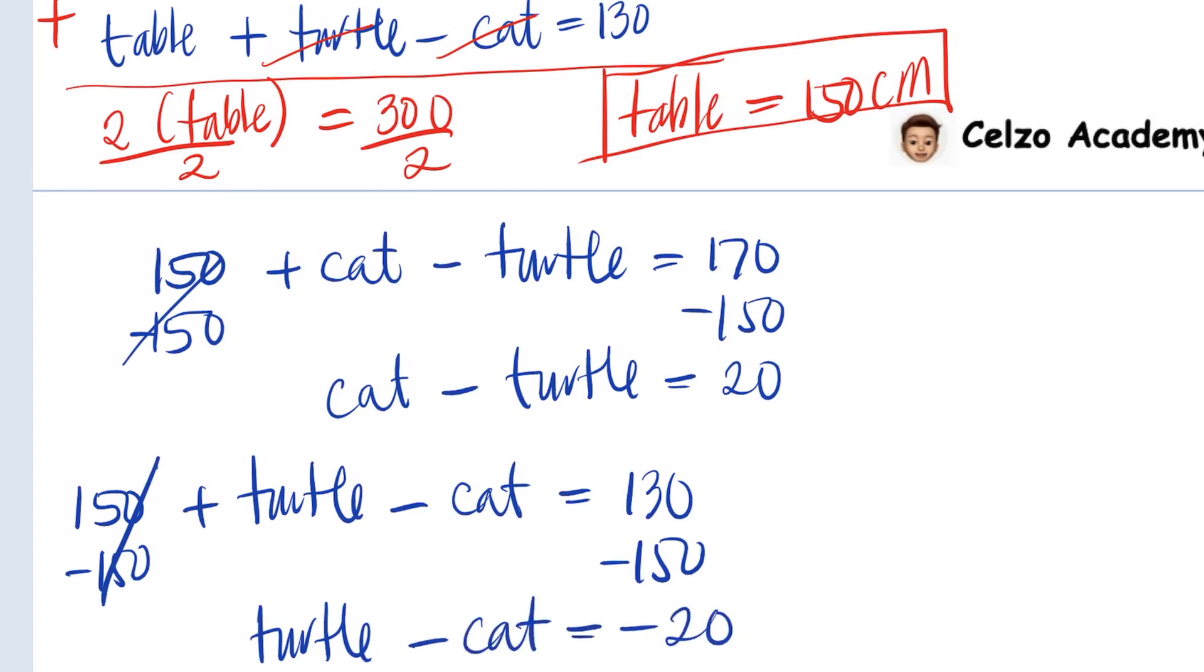So the only thing we know about the height of the turtle is that the difference between their height is 20. This means there are multiple possible answers for the height of the cat and the height of the turtle, for as long as the difference between the height is 20.